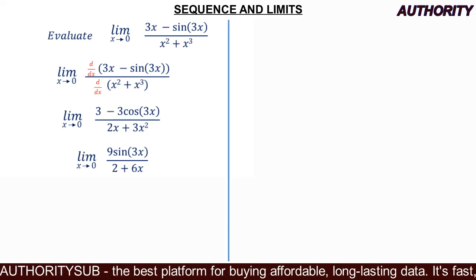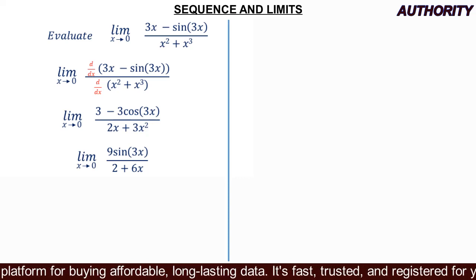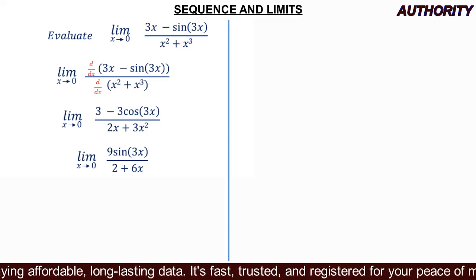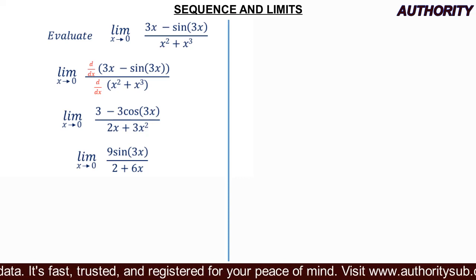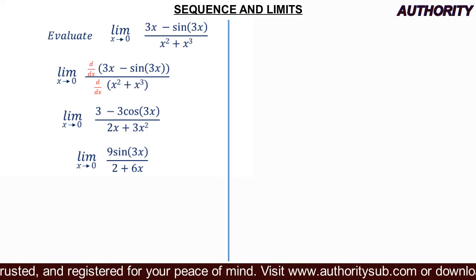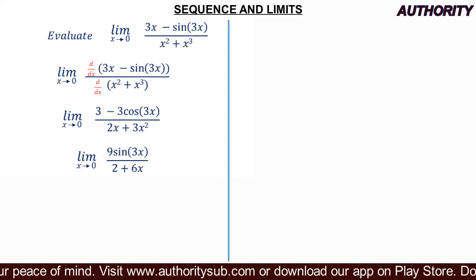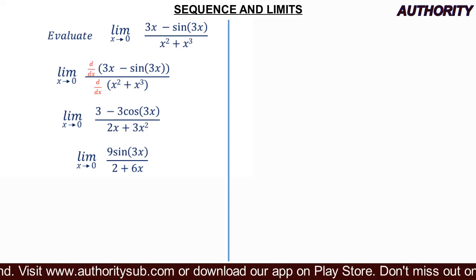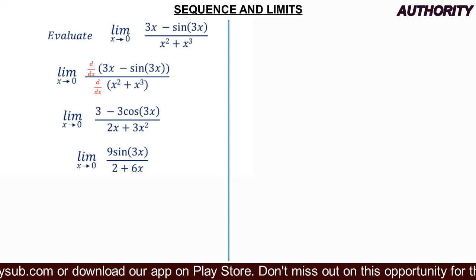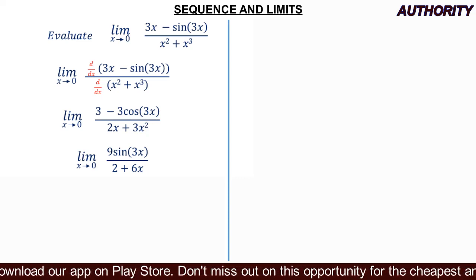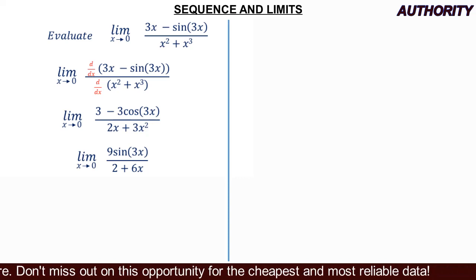Plugging in x = 0 again: in the numerator, 9 sin(3×0) = 9 sin 0 = 0. In the denominator, 2 + 6(0) = 2. So we get 0 over 2, which is still not the final answer we want, so we differentiate one more time.